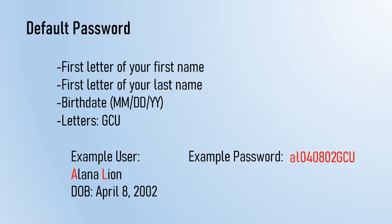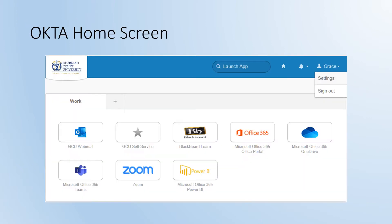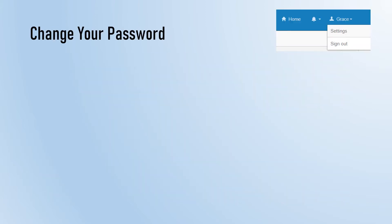Once you've signed into Okta for the first time, you can change your password to something you'll remember. On the Okta homepage, you can see all of the applications you will use as a GCU student, and since you've already logged into Okta, you don't have to log into anything else. Go to settings in the upper right corner and change your password to something only you know. This now becomes your password for everything, but in six months you will be asked to create a new password.